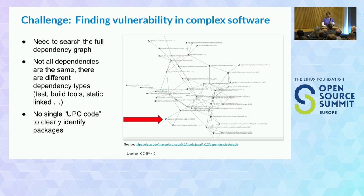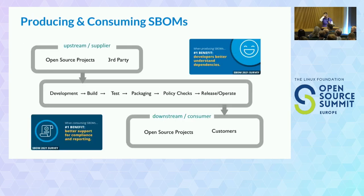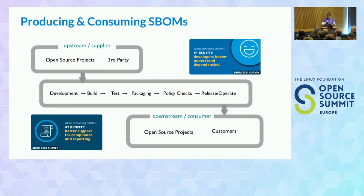We've got problems but we can make progress. In your basic supply chain, you have an upstream supplier using open source or third party that you bring into your flow, you build your product and your executables, and then you provide it downstream. By having the SBOM and the transparency, you really do understand your dependencies and what you're bringing in. You also have better support for your compliance and reporting, which your legal teams and risk management teams like.